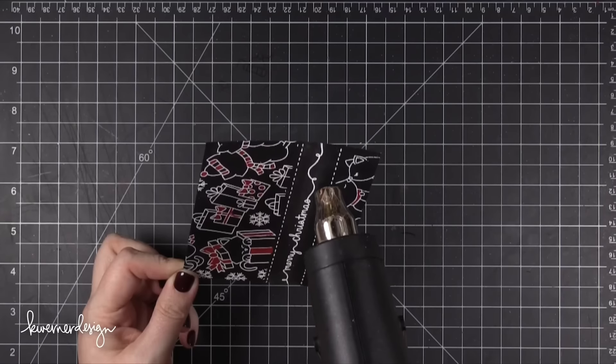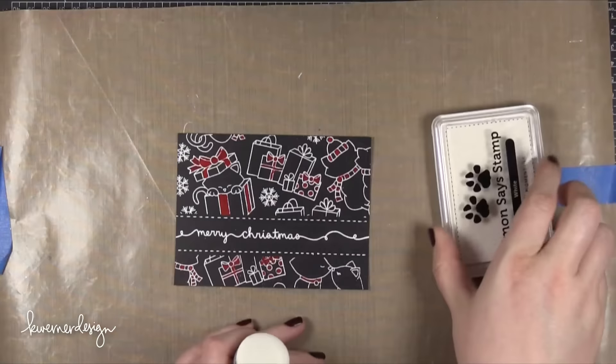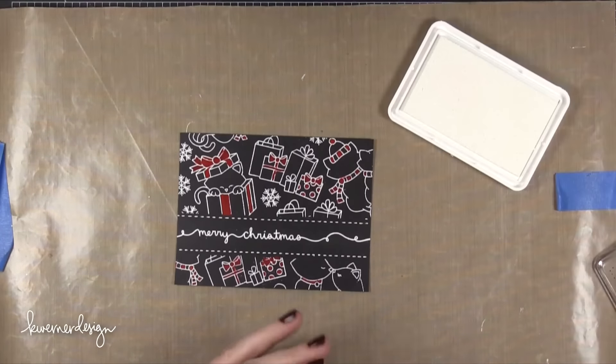I used a dry paint brush to wipe away any of the powder that was sticking around and then used my heat tool to heat set that.